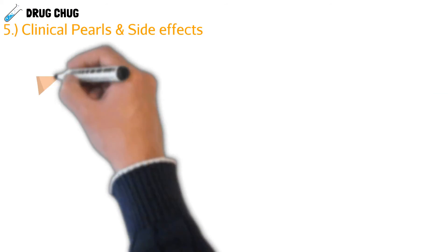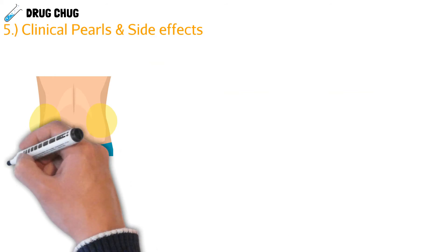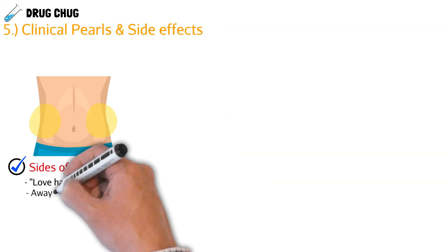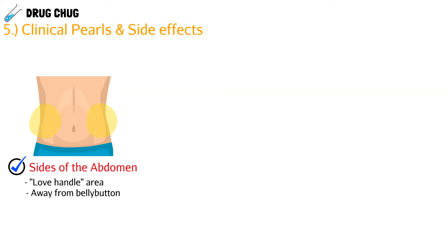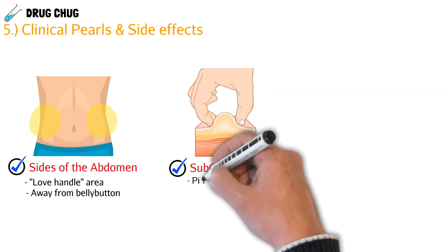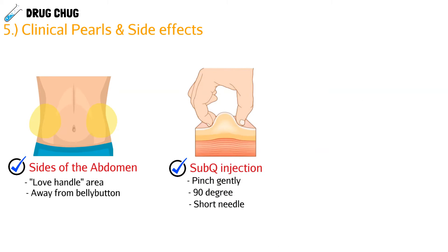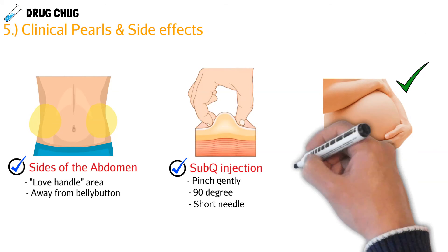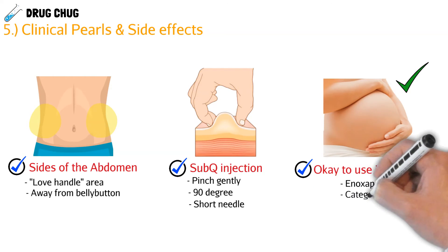For injection technique, inject into the sides of the abdomen — the love handle area — and stay away from the belly button. It's a subcutaneous injection, so pinch gently, hold the needle at a 90-degree angle, and go straight in. The needle is very short because we're only targeting the subcutaneous layer, not the muscle. Also good to know: enoxaparin is safe to use in pregnancy.